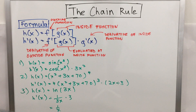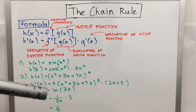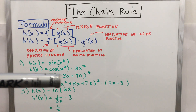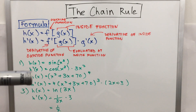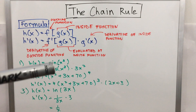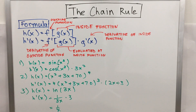Applying the formula again: the outside function is ln(blob), so its derivative is 1/blob. You have 1 over blob, where blob is 3x, times the derivative of the inside blob, which is 3. That gives 1/(3x) times 3 = 1/x.